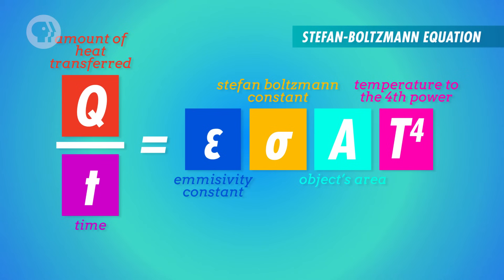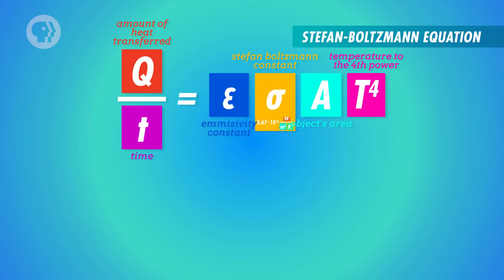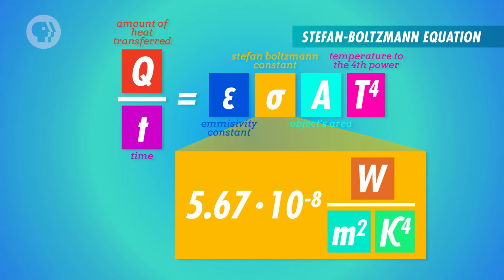And it says that the heat emitted over time is equal to the emissivity constant times a special number known as the Stefan-Boltzmann constant, times the object's area, times temperature raised to the fourth power.